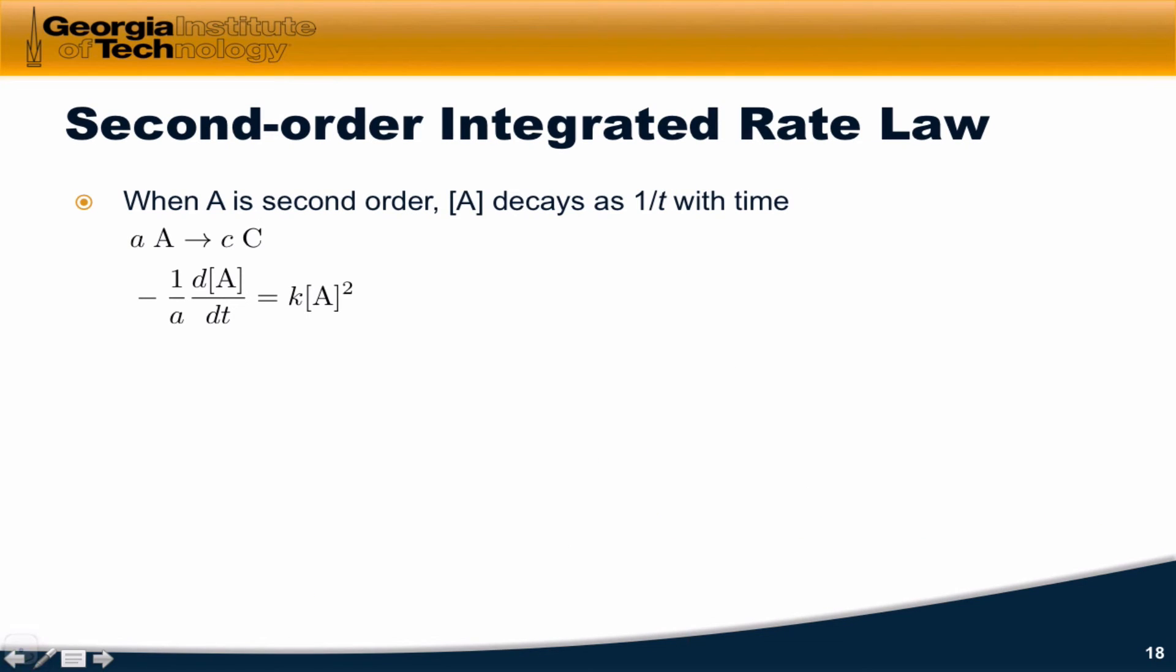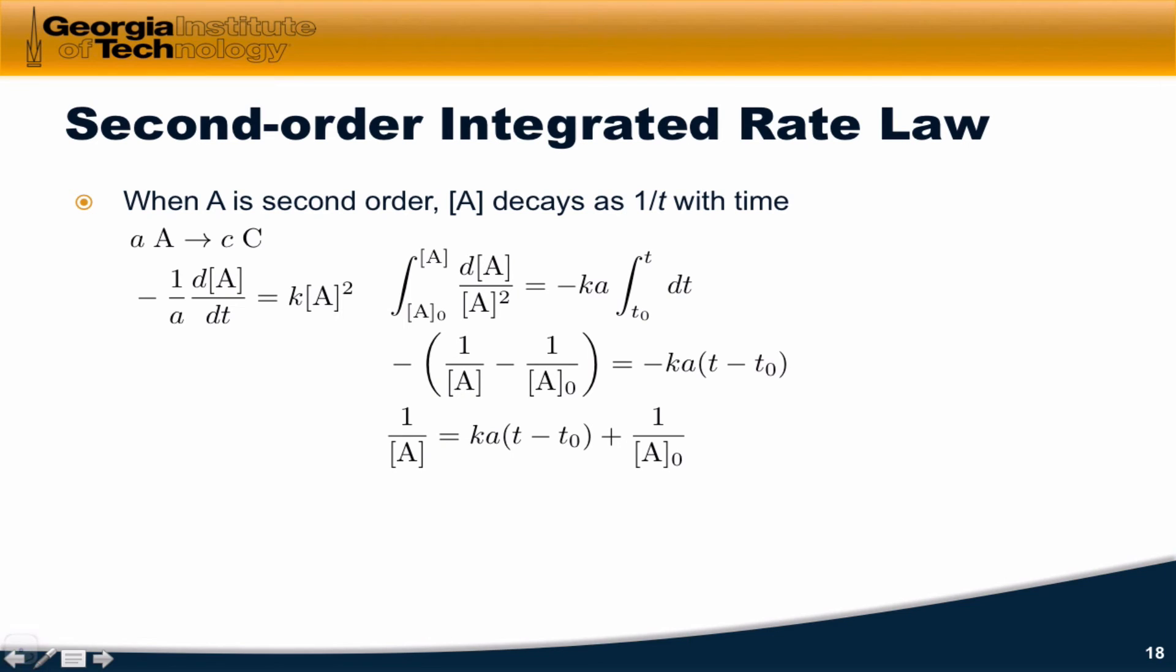When A is second order, the setup is again the same as the zero and first order cases, except now we have an exponent of 2 on the molarity of A instead of an exponent of 1. We again multiply both sides by negative ADT, bringing DT and negative A to the other side. We divide both sides by A squared, bringing A over to the left-hand side. And we get an integral between A and A0 of DA over A squared is equal to minus KA, a constant,